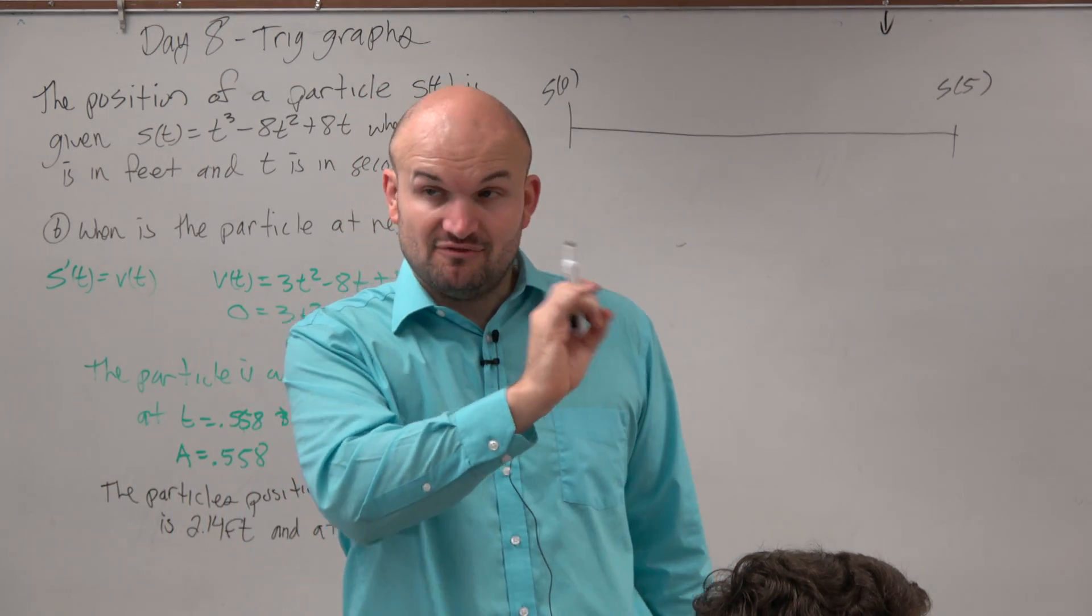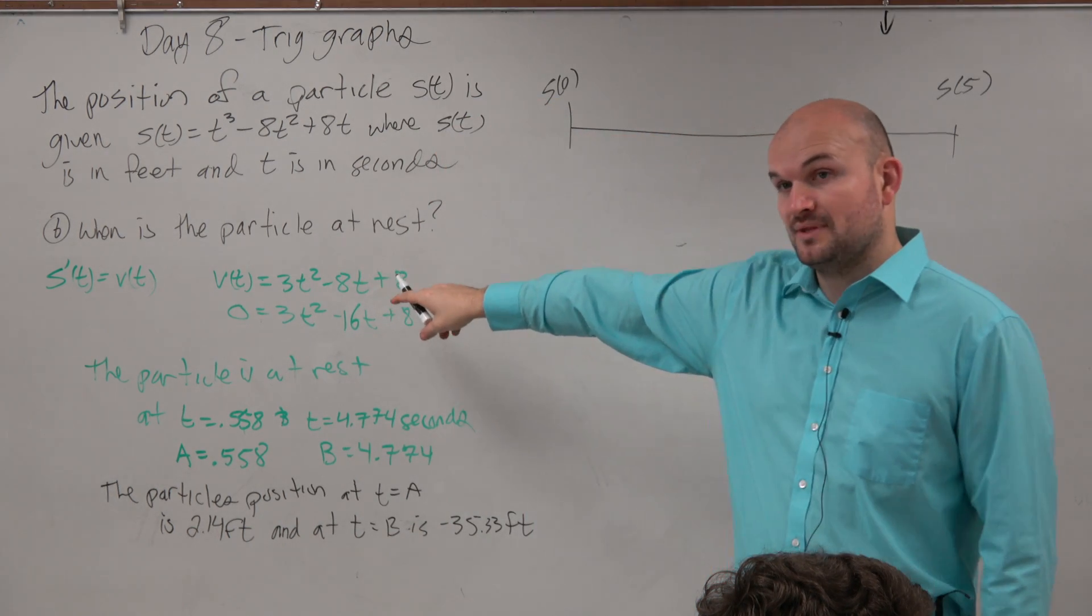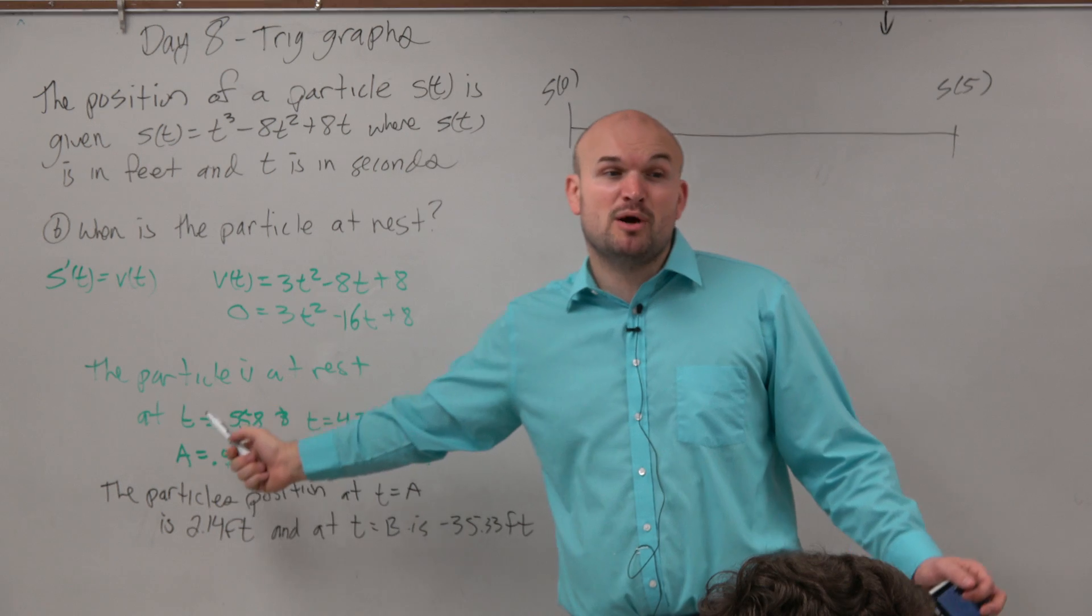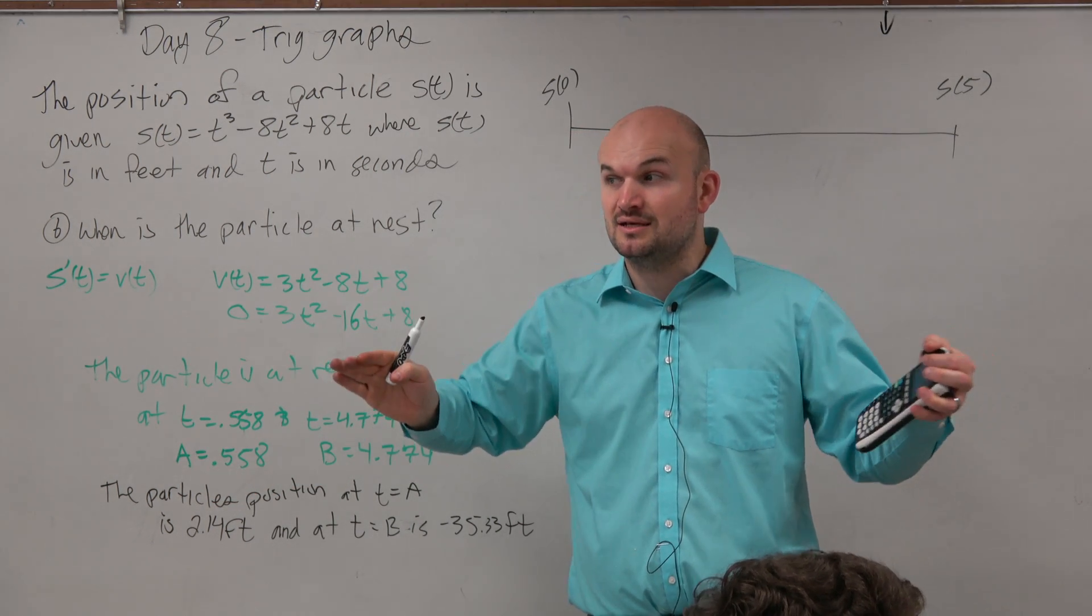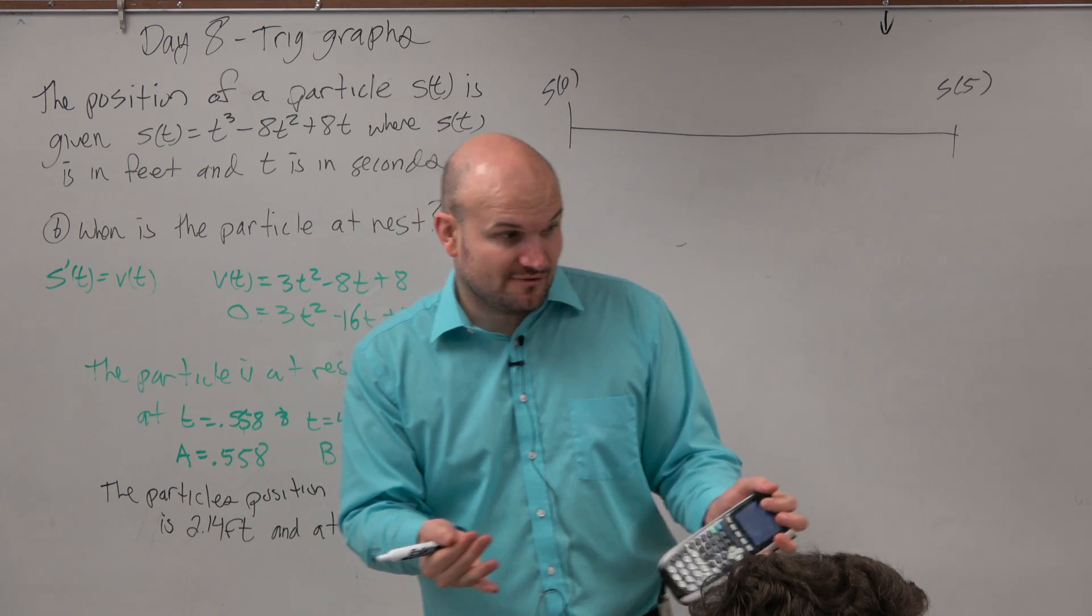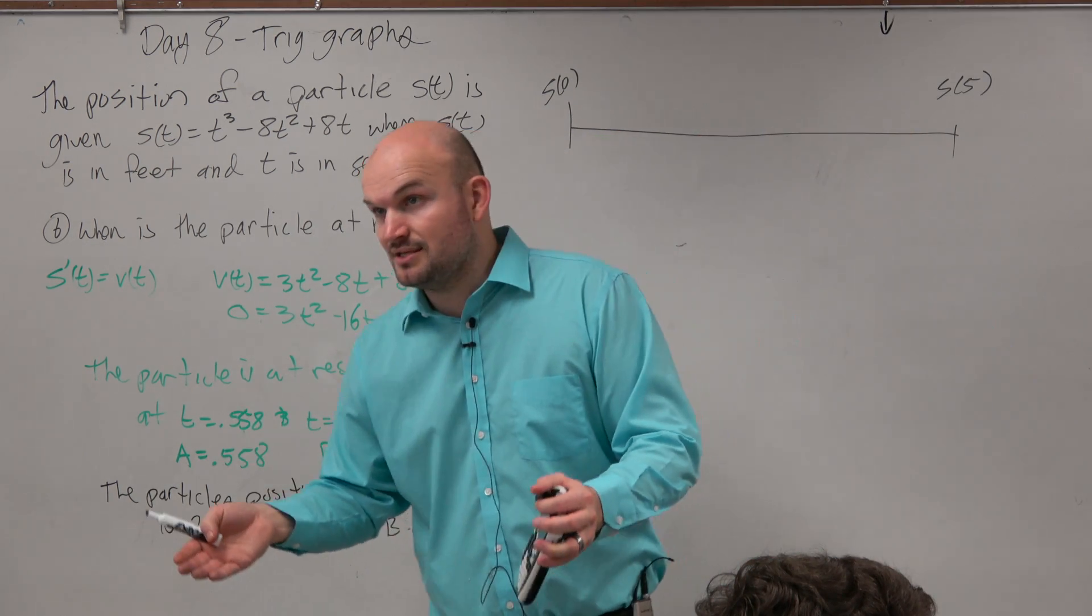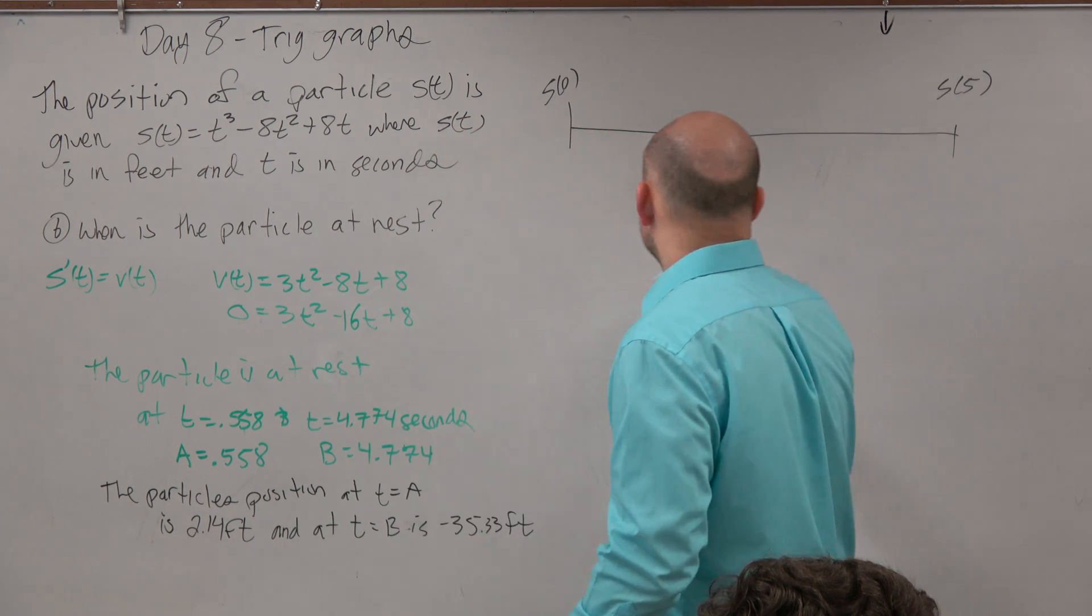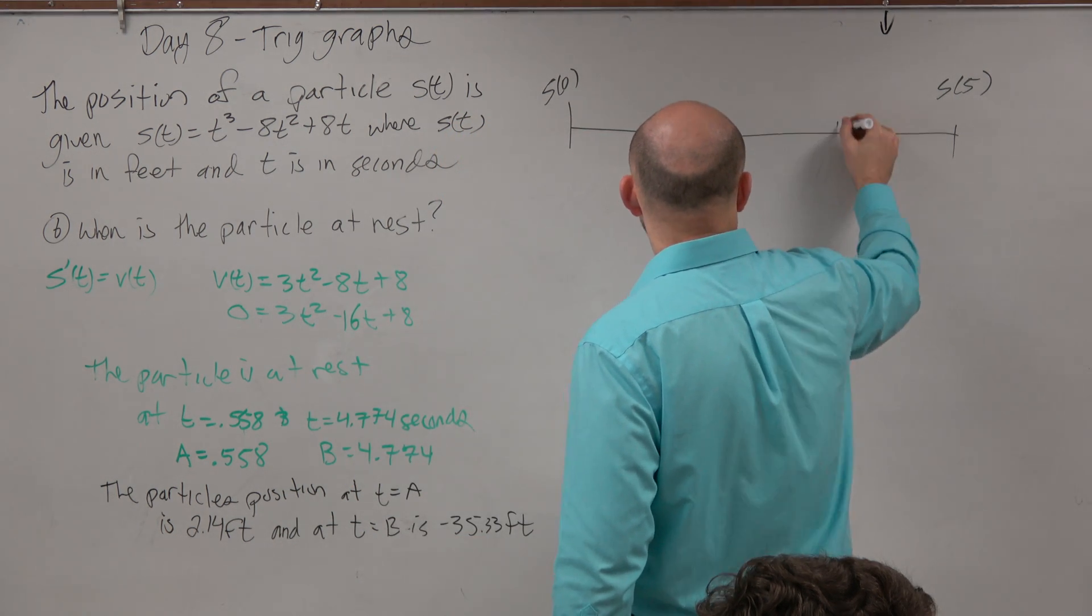Now, what we found is the velocity in previous, we took the velocity, set equal to 0, we had to use our graphic calculators, and we found two times where the particle was at rest, potentially changing directions. So that's important, because if we're going to the left and then going to the right, we got to be able to calculate those absolute value distances.